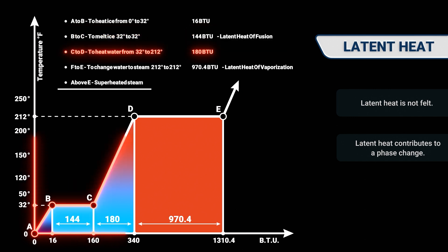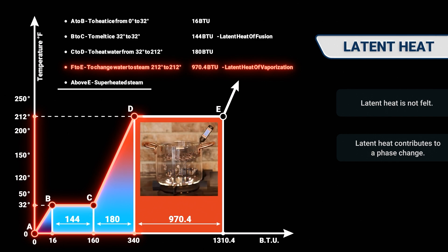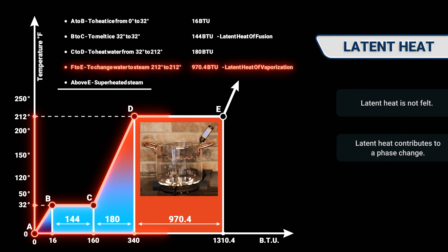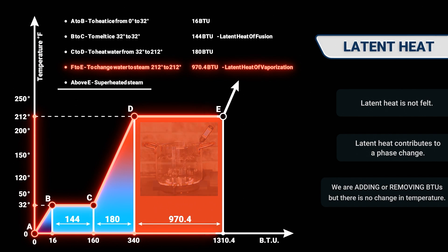The amount of heat it takes to change a solid to liquid and vice versa is called the latent heat of fusion. For water, that's about 144 BTUs per pound. It's latent heat because it's hidden heat. We're adding or removing BTUs, but we're not seeing a change in temperature. The amount of heat it takes to change from a liquid to a vapor and vice versa is called the latent heat of vaporization.